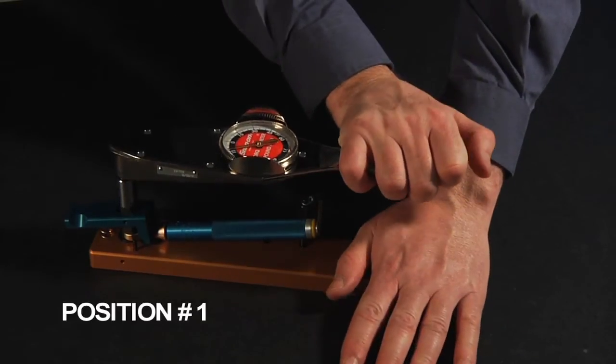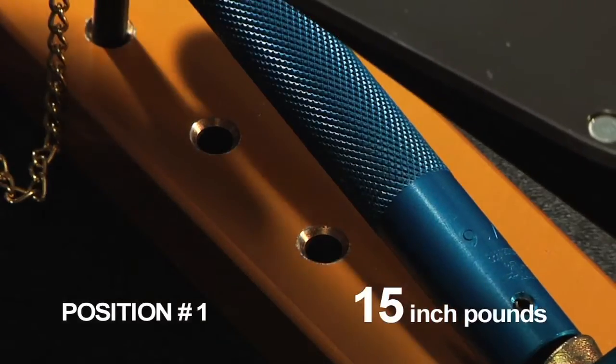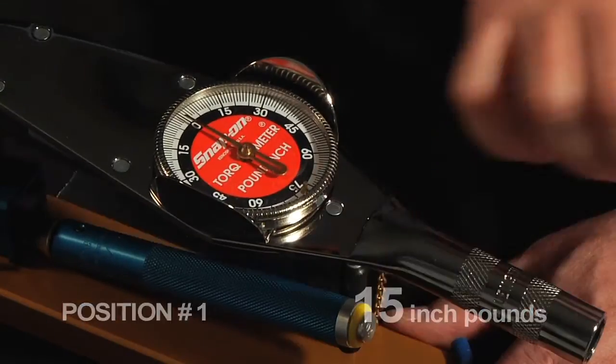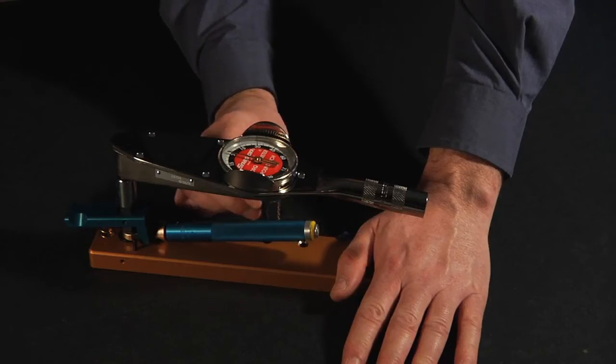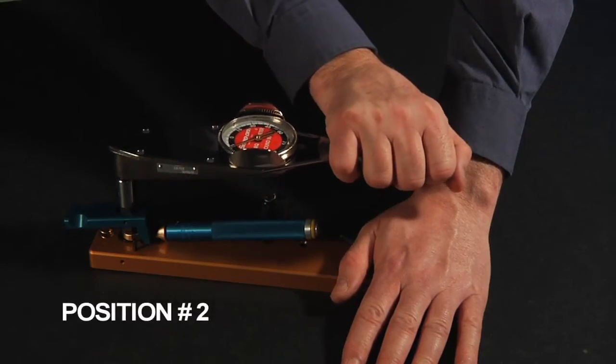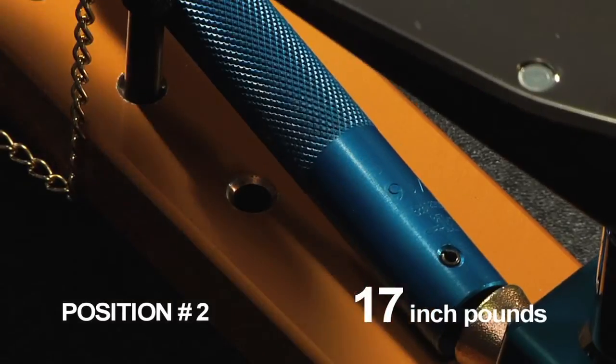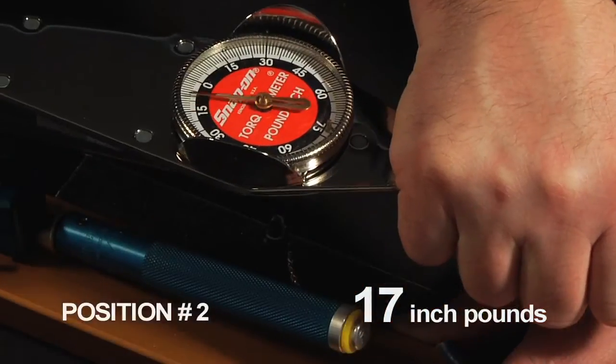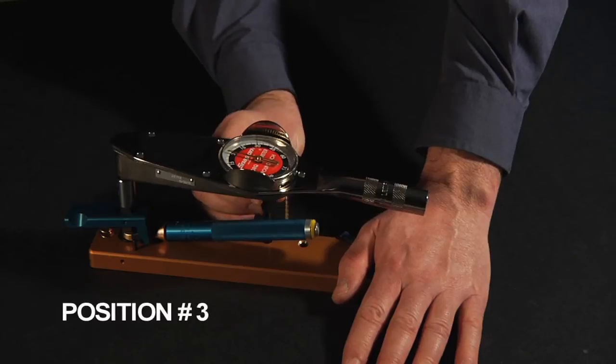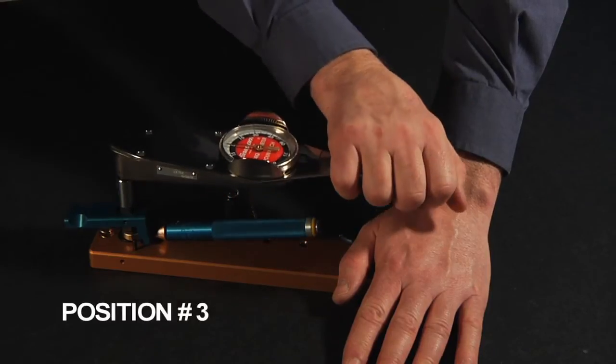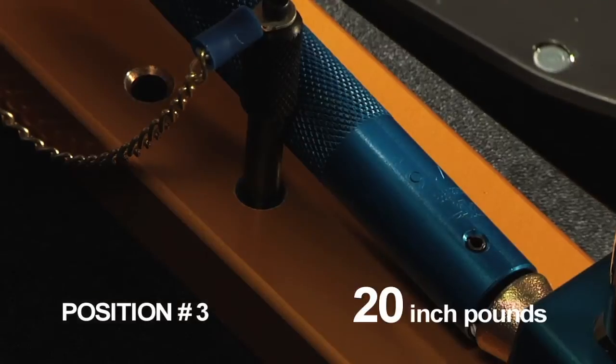At position one, a torque of 15 inch-pounds is exerted. At position two, we get a reading of 17 inch-pounds. And in the third position, we get an exact measurement of 20 inch-pounds.